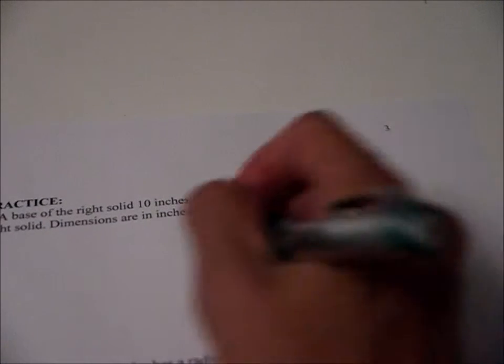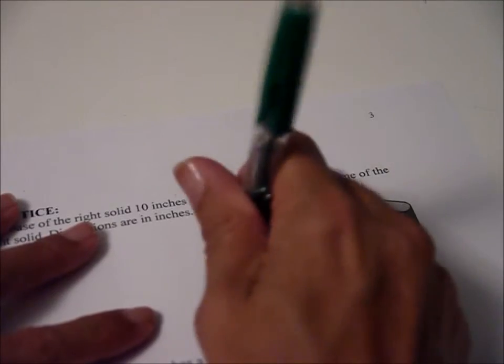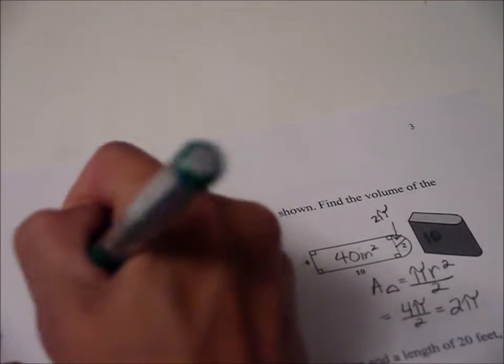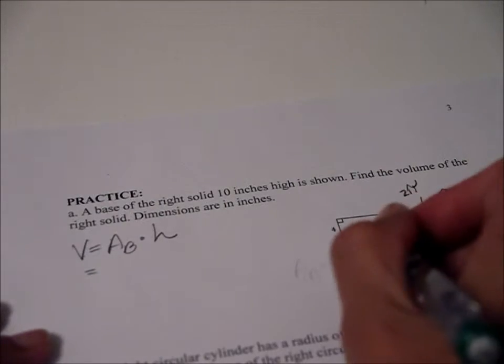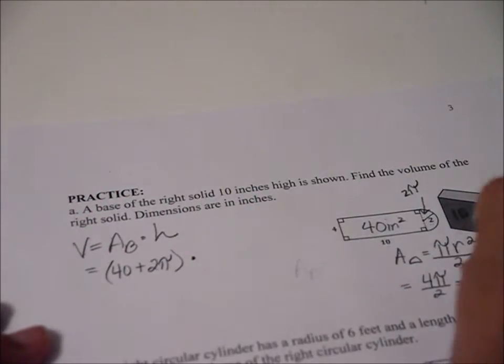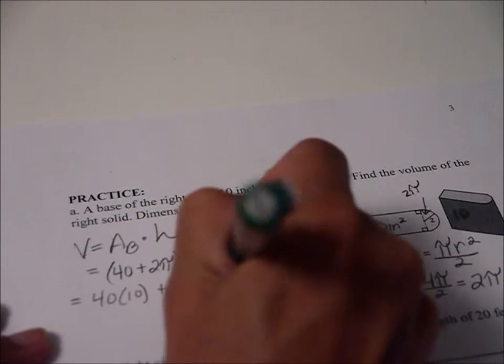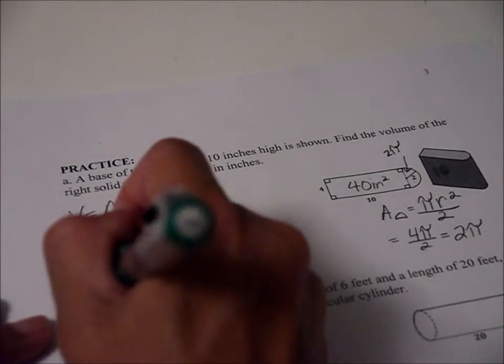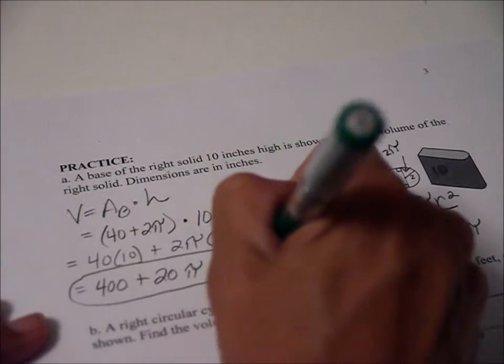So now to add them up, the area of the base is 40 plus 2π. In fact, I'll just go ahead and do volume. Volume equals area of the base times height. Why do I write that over and over? Because then I don't forget. So area of the base was 40 plus 2π. And the height, again, was 10. So we multiply everybody times 10. And when I do that, I get 400 plus 20π inches cubed.